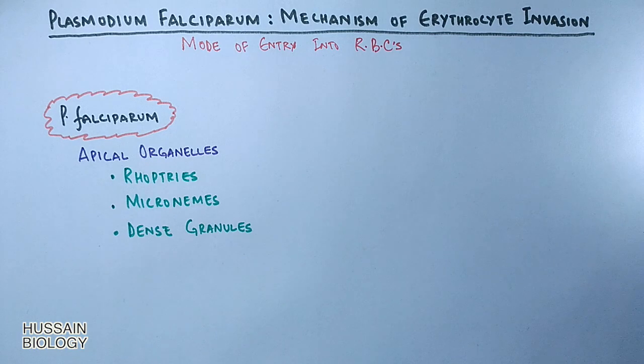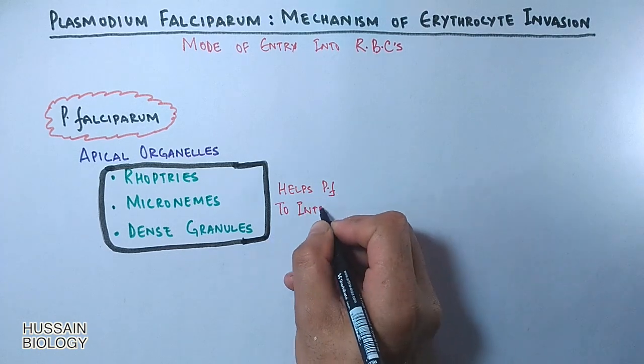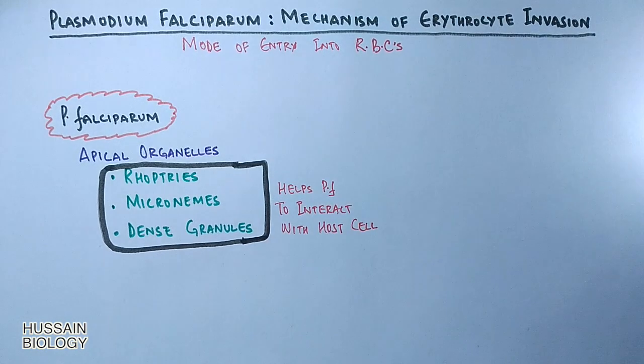These organelles help the Plasmodium falciparum to interact with the host cell. Actually, there are different proteins from these organelles that act as ligands for the receptors present on erythrocytes.